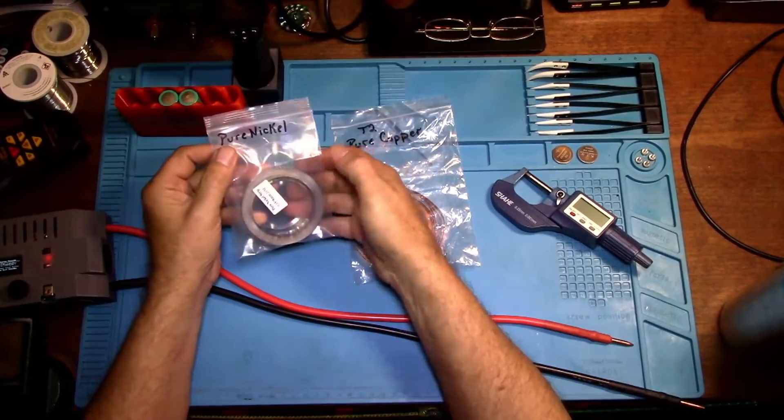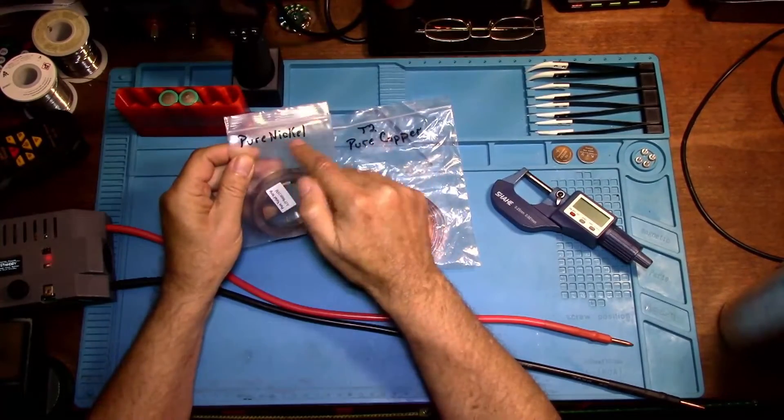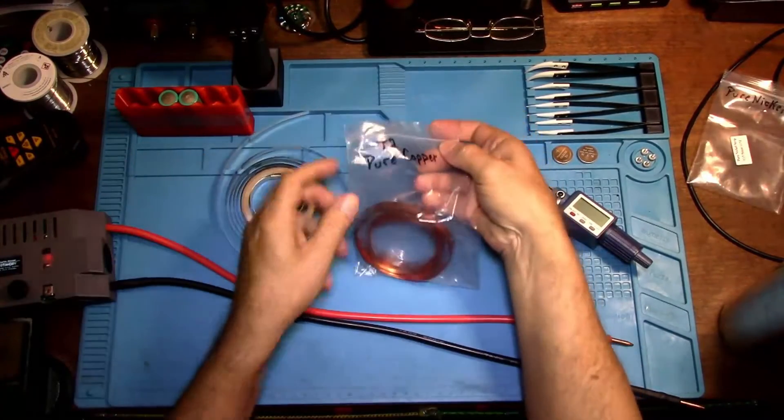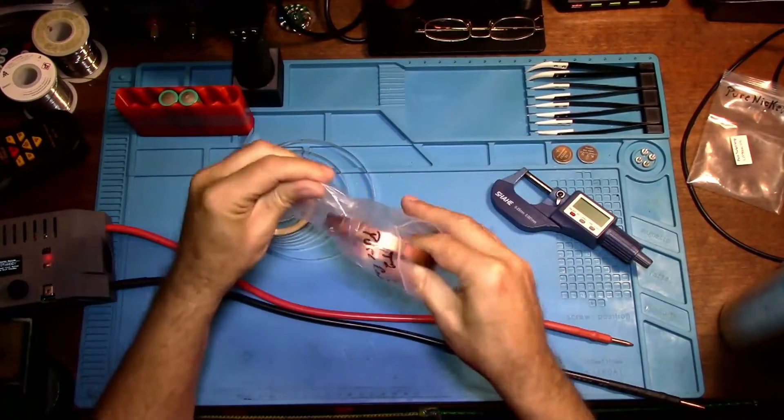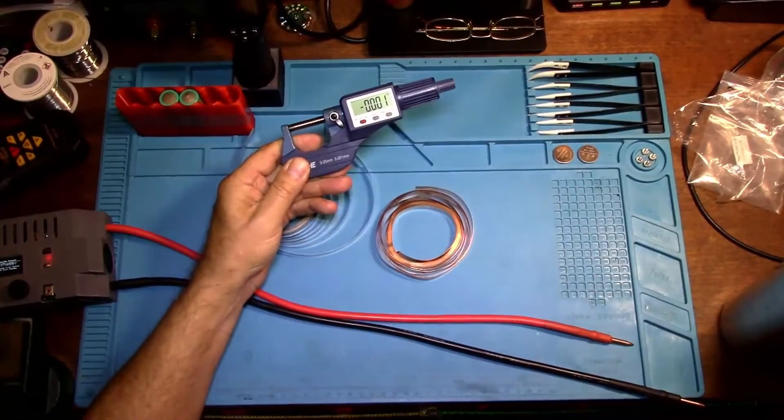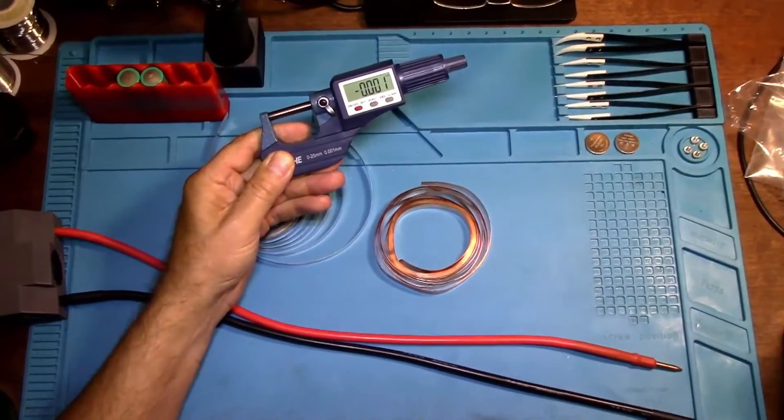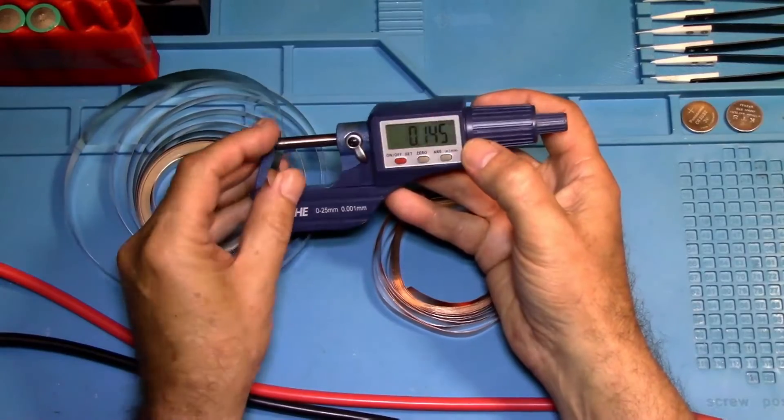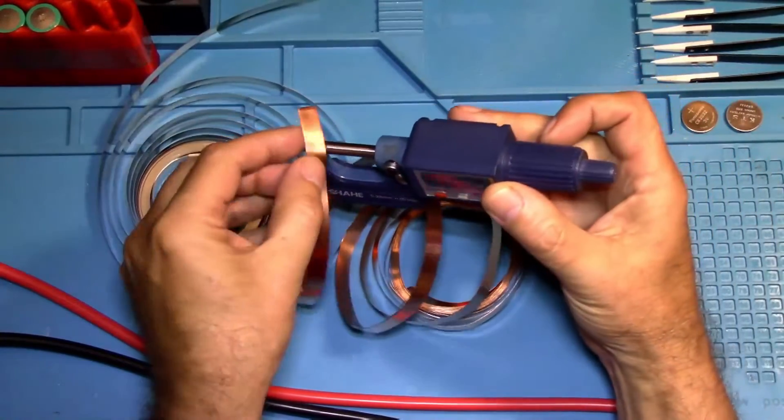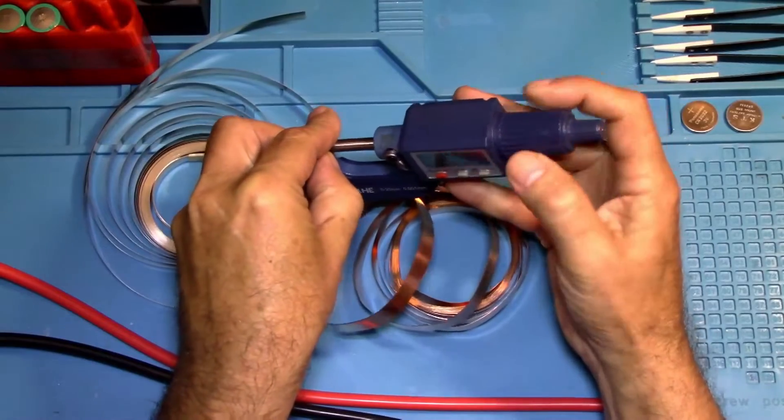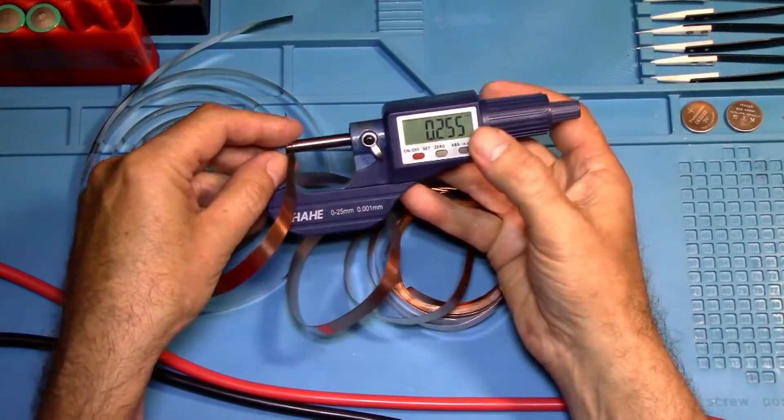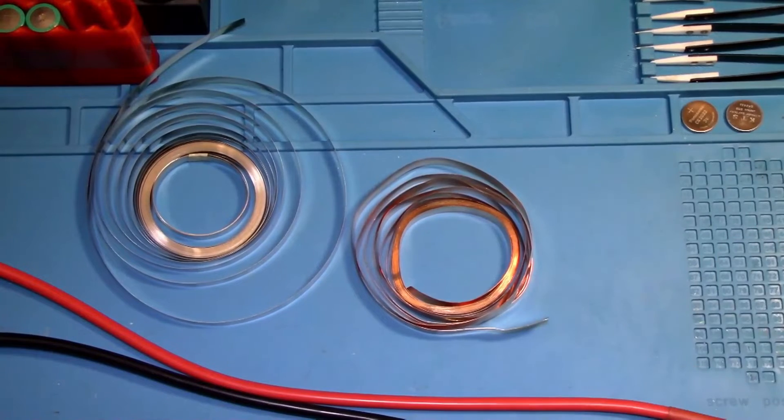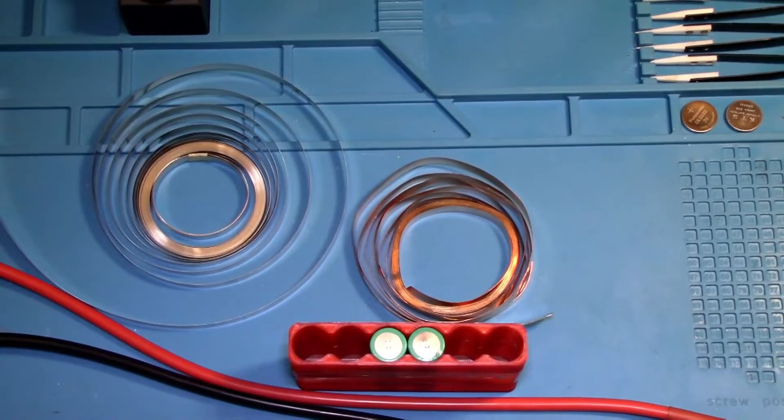Okay here we are at the bench. I put pure nickel so I don't get it confused. And then the T2 pure copper stripping. Now we're going to zoom in a little bit here. So it's 0.145. This feels more like 0.2 but let's see exactly. Yep 0.25. Wow 0.25 copper. So that's like 0.4 total millimeter. That's going to be quite the test to see if this can pull it off.